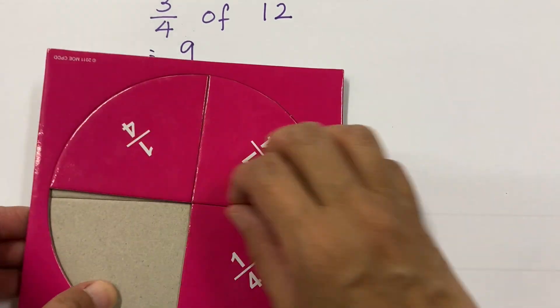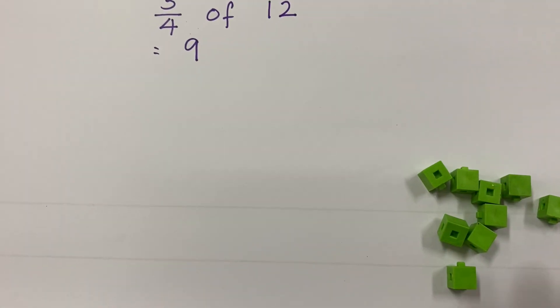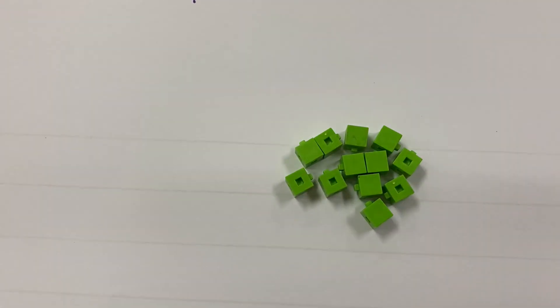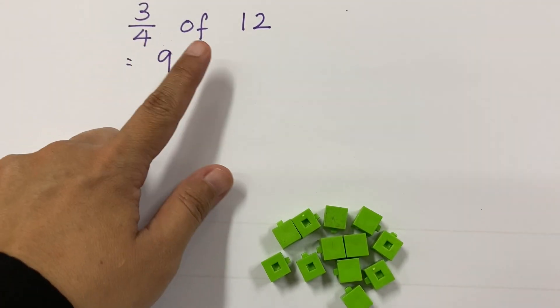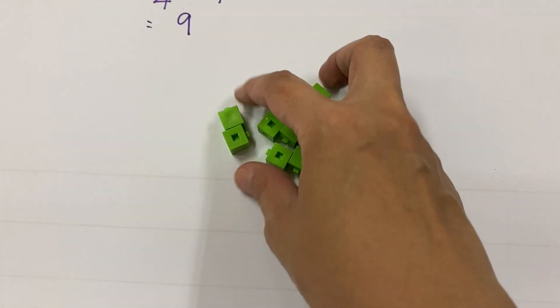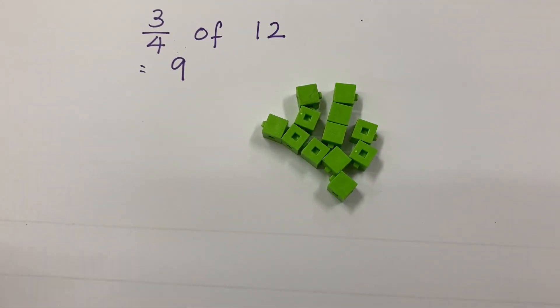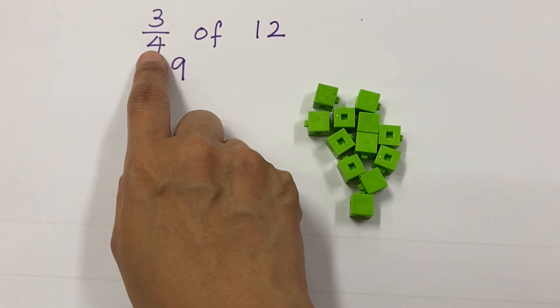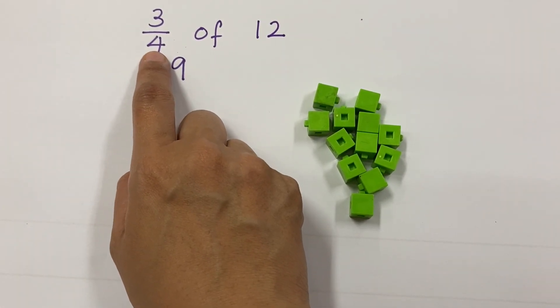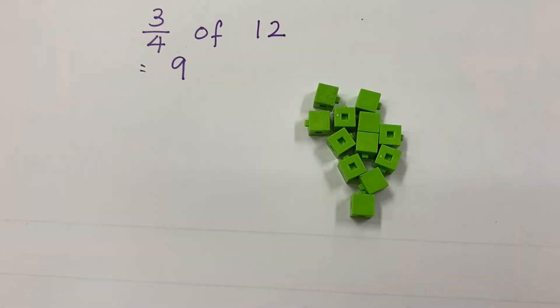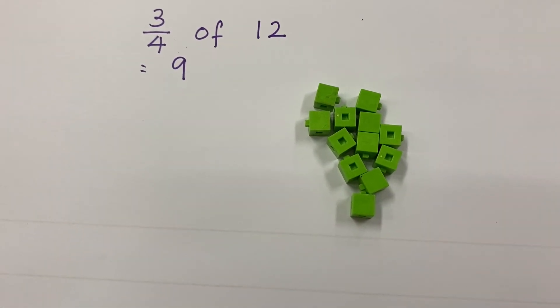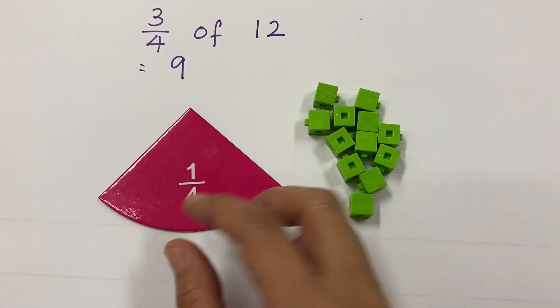Now I'm going to show you how to do this in groupings. We use the same question: three-quarters of 12, so we have 12 cubes. What you're supposed to do is always look at the denominator — the denominator will tell you the groupings.